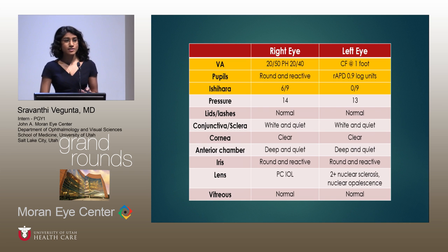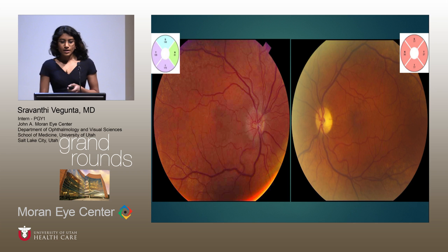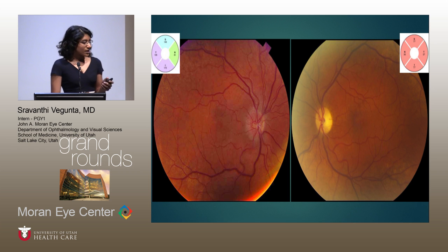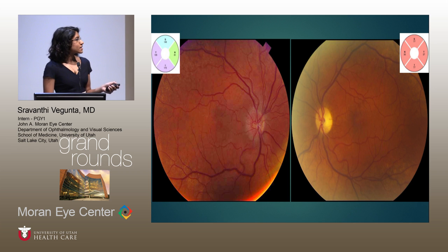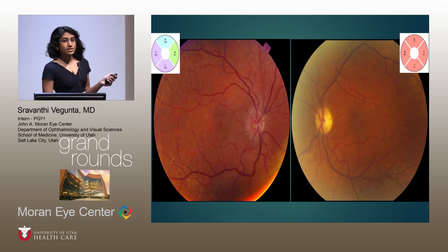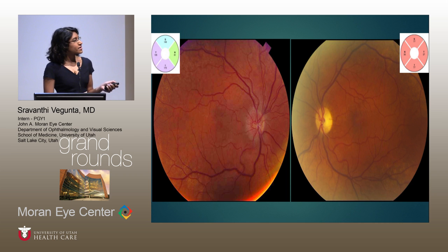The rest of her slit-lamp exam was relatively normal. On dilated fundus exam, she had temporal pallor and telangiectasis of her right optic nerve and significant optic nerve swelling on OCT-RNFL superiorly, temporally, and inferiorly. On the left eye she had significant nerve pallor and OCT-RNFL showed atrophy as well.